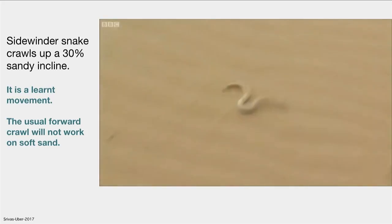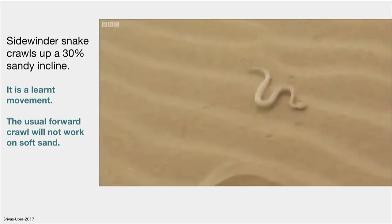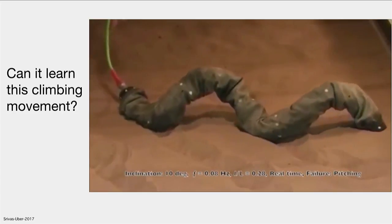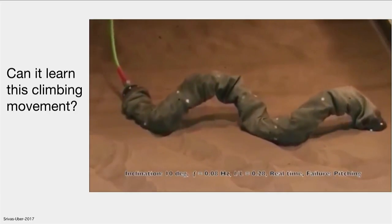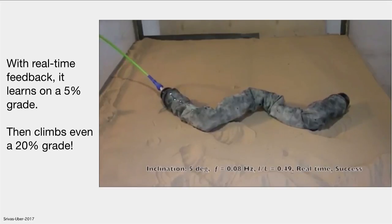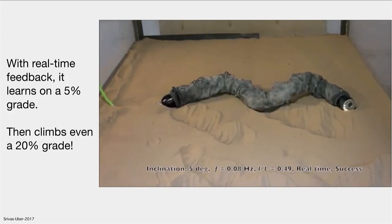So here's an example of what's going on. This is a Sidewinder snake, and it's climbing up a sand dune. The sand dune is at 30% incline, and most snakes cannot climb that. What this Sidewinder snake does is go sideways — it's a learned movement, not usual for any snakes. So they tried this with a snake robot. They wrapped it up with enough cloth so the mechanics don't get jammed. And you can see it tries and tries, and it fails — and this is on a 10% incline. When they put it on a 5% incline and made it successful, you can see it kind of learned to do that clumsily.